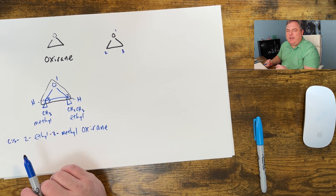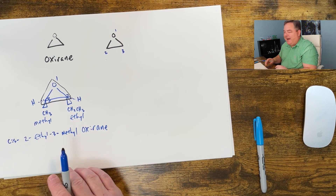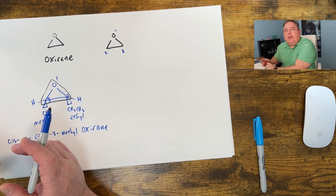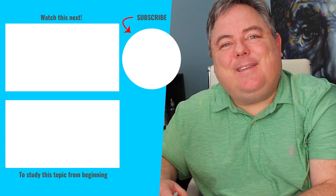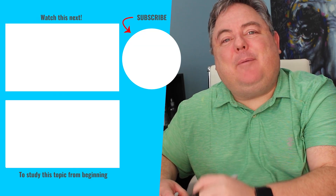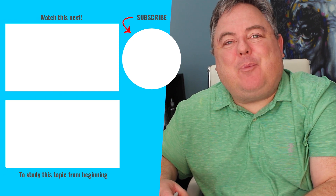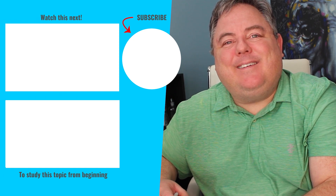That's one way of naming them. The other two ways — the oxide and the epoxy way — are more common. I hope this simple little video helps you understand how to name epoxides. Subscribe to the channel and learn more about organic chemistry.